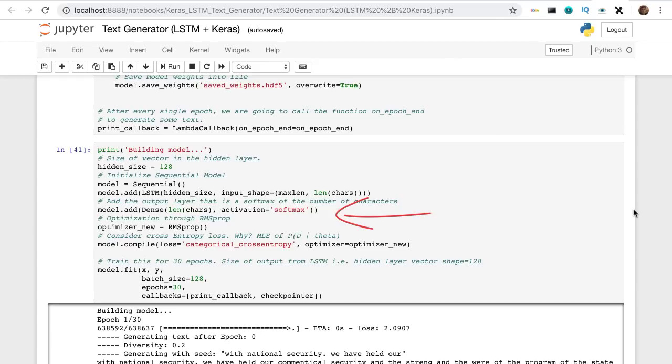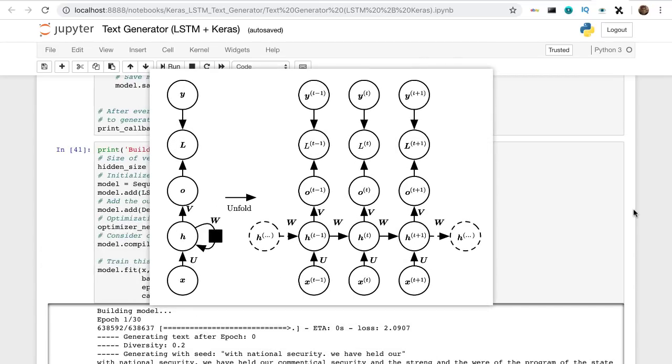And the output is simply a softmax vector of characters. The actual result, however, is a one-hot encoded vector.